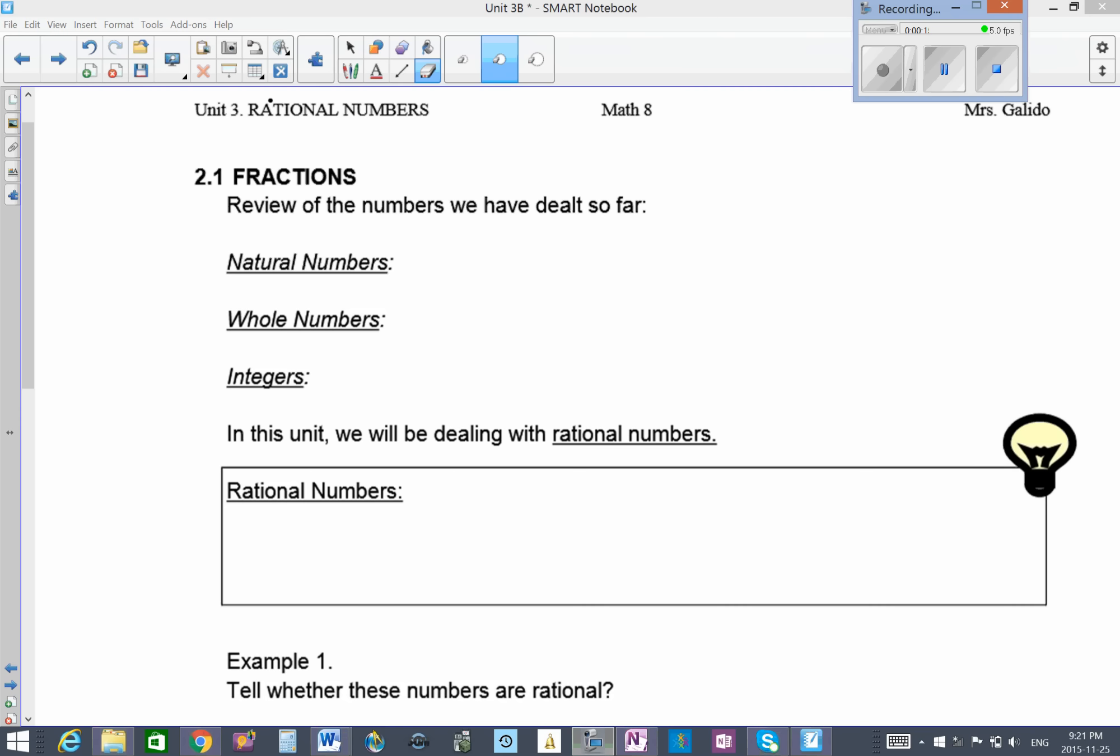We have done natural numbers in our first unit. These are just our counting numbers: 1, 2, 3, and so on. Symbolically in math, it's the letter N. Whole numbers are just natural numbers with the addition of 0, and that's W for its symbol.